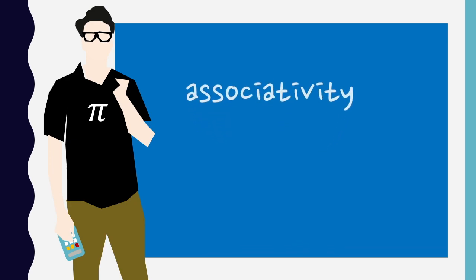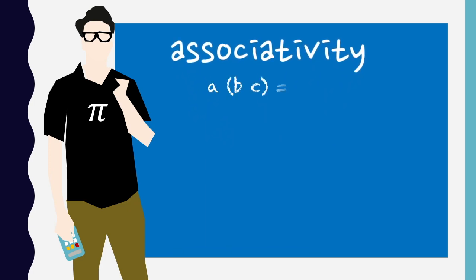Associativity is a kind of bracket anywhere property and allows us to extend operations like multiplication and addition, which are defined between two numbers to multiple arguments. That's why we can have the sum of five numbers, the product of five numbers,